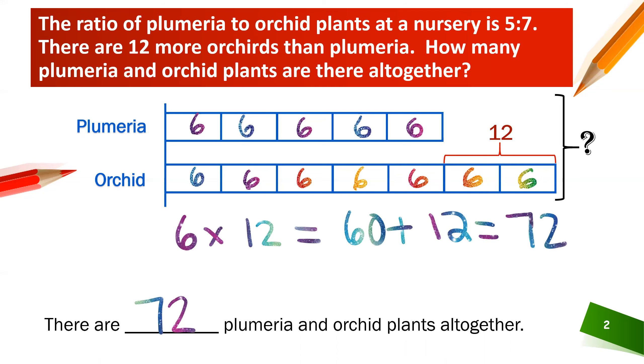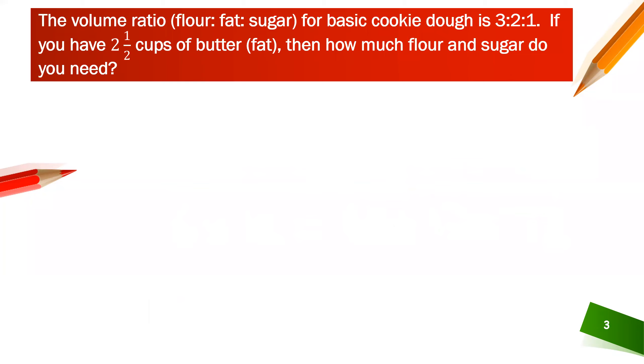Okay let's try another one. The volume ratio of flour to fat to sugar in a basic cookie dough is 3 to 2 to 1. If we have two and a half cups of butter which is the fat, then how much flour and how much sugar do you need?